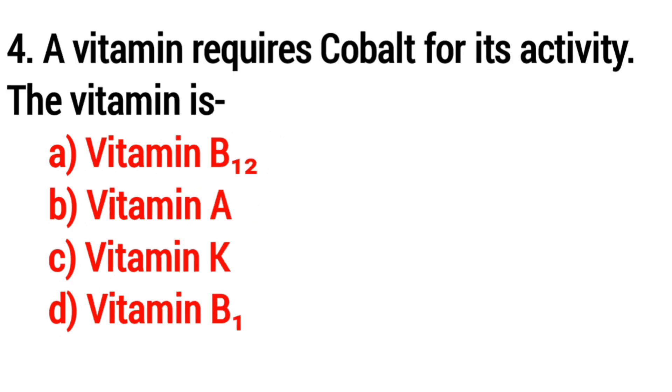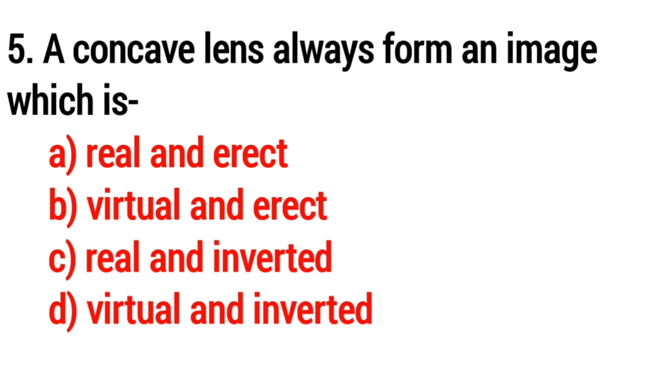Question 4: A vitamin requires cobalt for its activity. The vitamin is? Answer: Option A: vitamin B12. Question 5: A concave lens always forms an image which is? Answer: Option B: virtual and erect.